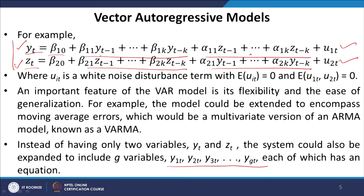Instead of yt and zt, we can have y1t, y2t, y3t, or call them yt, zt, wt, xt and so on. In a VAR system, each variable has an equation with lagged values of all variables included, and we determine whether those lagged values explain the current value of a particular variable.